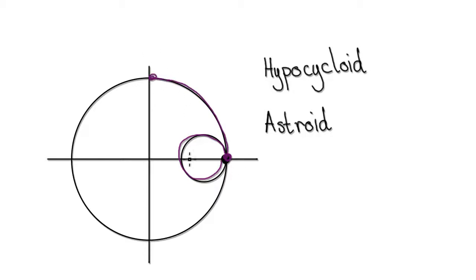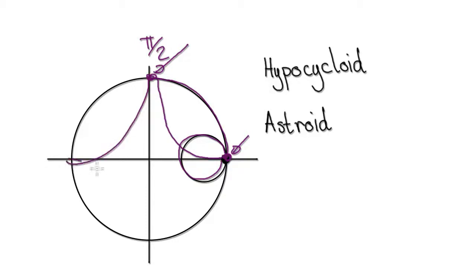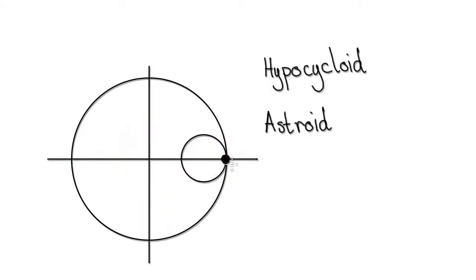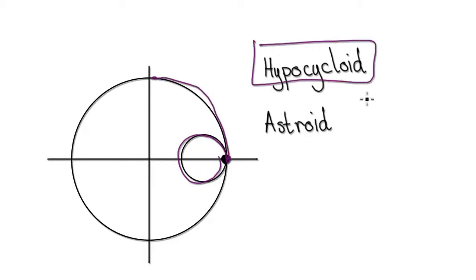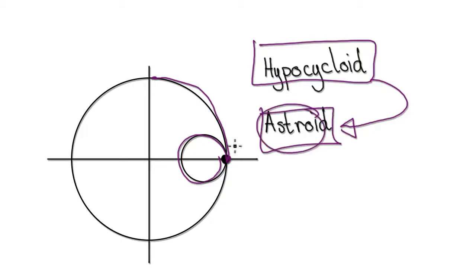By the time it gets to pi over 2, this particle will be right here, so we'll trace out this path. In the special case where this circumference is precisely a quarter of the big circumference, the hypercycloid is known as an asteroid.